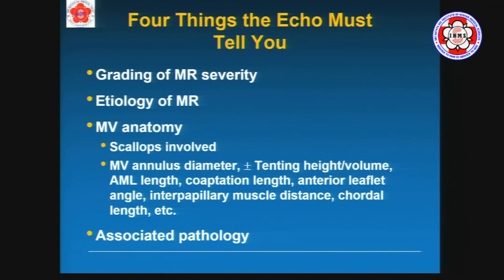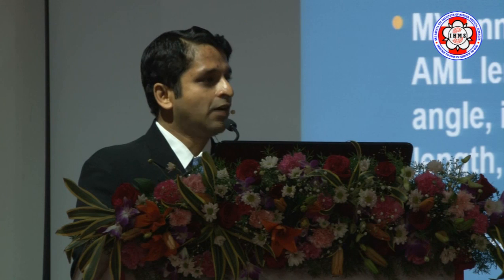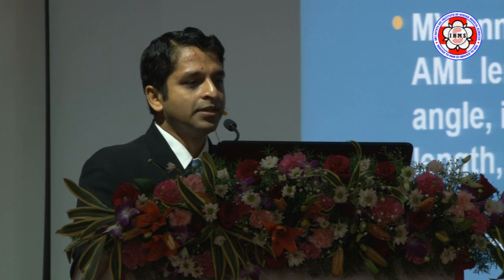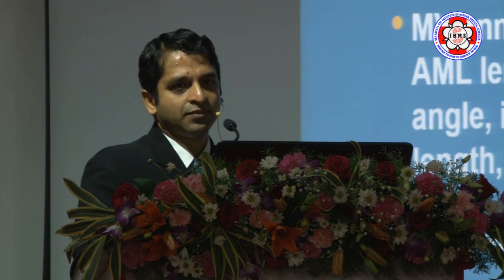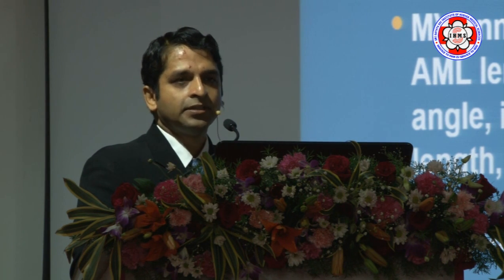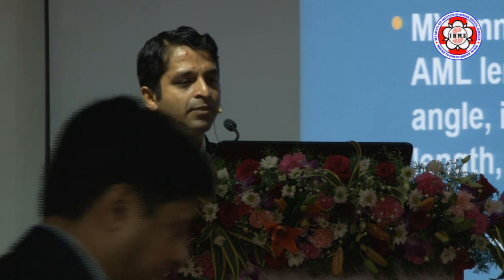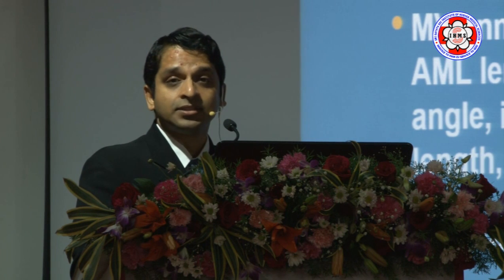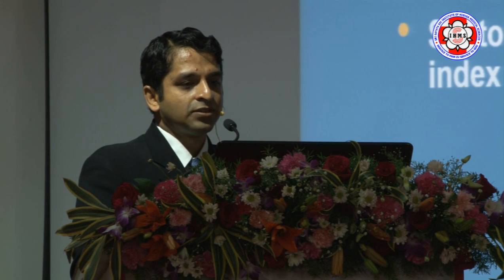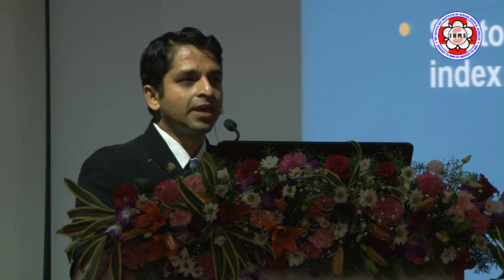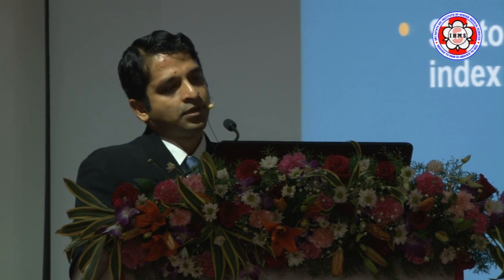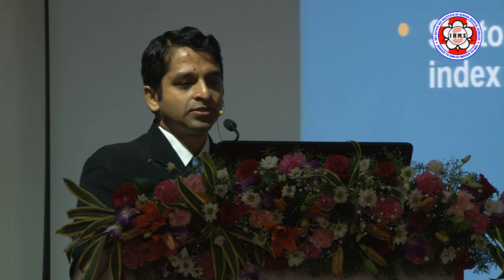Even if you don't have 3D, the 2D information by itself is quite useful. So the four things you need to know when doing an echo for mitral regurgitation: number 1, how bad is the MR; number 2, what's the etiology of the MR; number 3, what's the mitral valve anatomy — which varies depending on the etiology and the particular institute; and finally, what's the associated pathology. For example, if the left ventricle is dilated, especially in patients with functional mitral regurgitation, the chance of successful repair is very less. A good echo will hopefully increase your chances of a very successful mitral valve repair. Thank you for your attention.